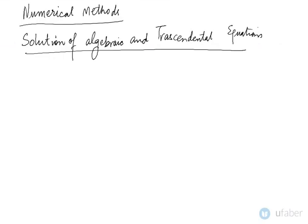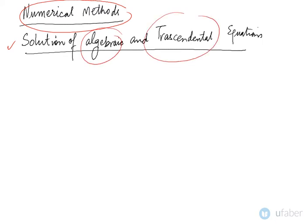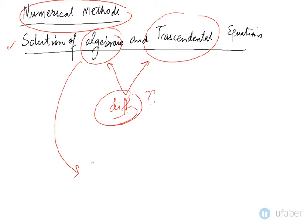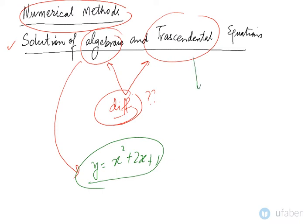Hello and welcome to this video lecture on the topic of numerical methods. In this topic we would start off with the solution of algebraic and transcendental equations. You would obviously be curious to know about the difference between an algebraic equation and a transcendental equation. A simple algebraic equation would be of the form y equals x squared plus 2x plus 1 — a simple polynomial.